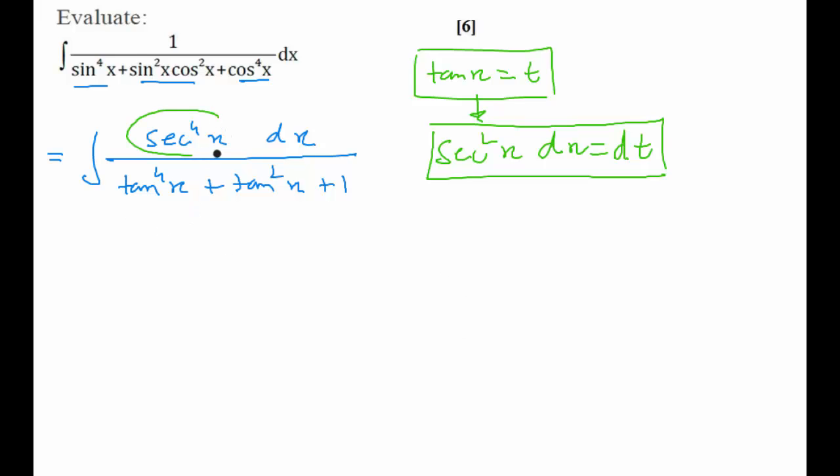So I already have sec to the power 4. Let us give two secs to the dx value, which on combining will be converted to dt, and what will happen to the remaining sec square value? The remaining sec square value can be written as 1 plus tan square, and 1 plus tan square is nothing but 1 plus t square. So your numerator will now become 1 plus t square into dt. And what about the denominator? Denominator is very clear. Since tan x is equal to t, your denominator will become t to the power 4 plus t square plus 1.